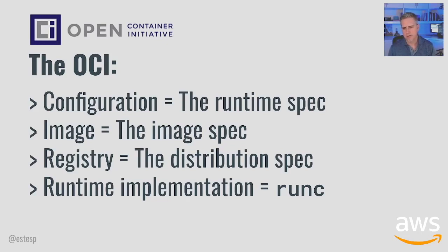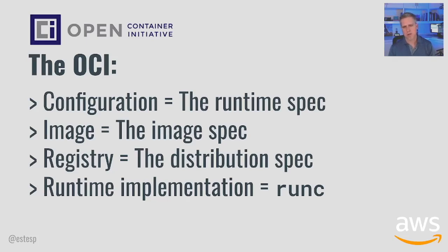The Open Container Initiative was created in 2015 to make sure that the space of containers, runtimes, and registries didn't fragment into different ideas, and to standardize around the core concepts from Docker. That configuration became the runtime spec in the OCI. That image bundle became the core of what is now the image spec. And that registry API has been formalized into the distribution spec. Almost all runtimes today are conformant to these three OCI specifications, and the OCI community continues to innovate around them.